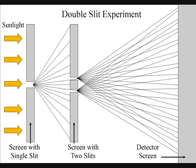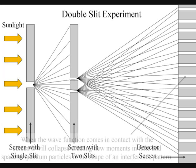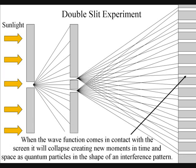The part of the wave that does not come in contact with the screen will expand in all possible routes, going through both slits. When this wave particle function comes in contact with the screen, it will collapse, creating moments of time and quantum particles in space in the shape of an interference pattern.